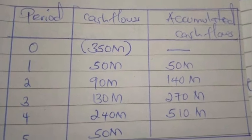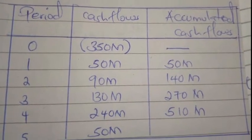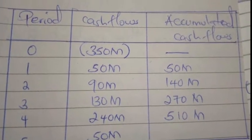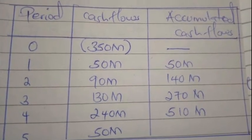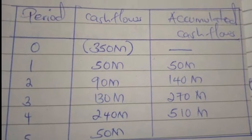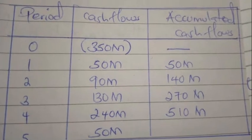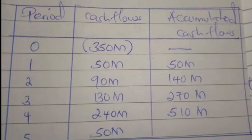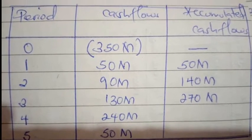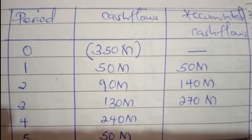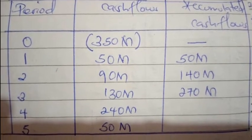In year one we recover 50 million. In year two we recover another 90 million, giving accumulated cash flows of 140 million. In year three we recover 130 million, accumulating to 270 million. In year four we would recover 240 million, but adding that gives 510 million, which exceeds our target of 350 million. Since year four gives excess, we stop recording the accumulated total at year three, which is 270 million, and apply the formula for non-uniform cash flows.